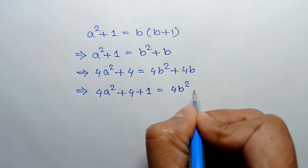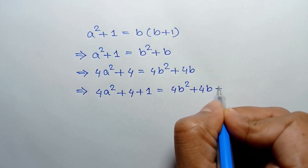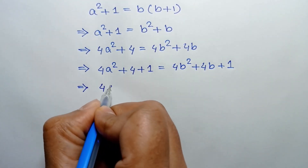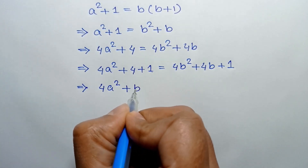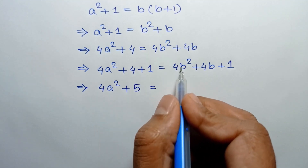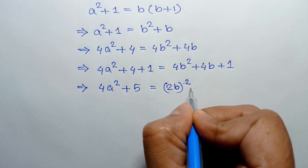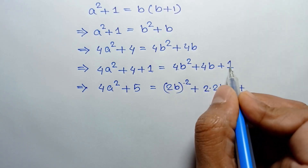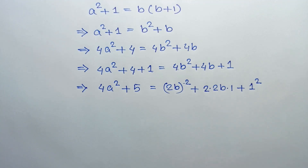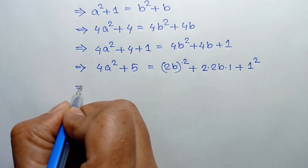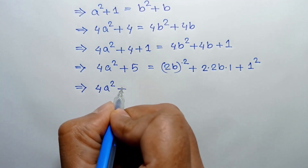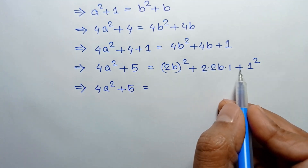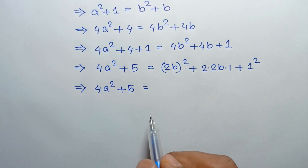So 4a² + 5 = 4b² + 4b + 1. The right side can be written as (2b)² + 2·(2b)·1 + 1², and applying the formula a² + 2ab + b² = (a+b)², we get (2b+1)².